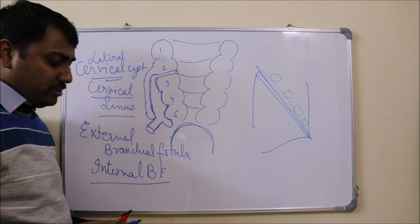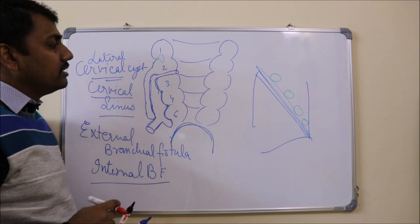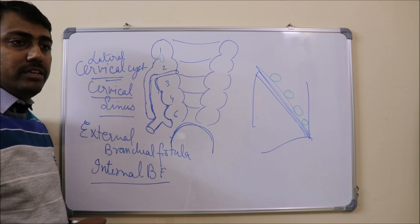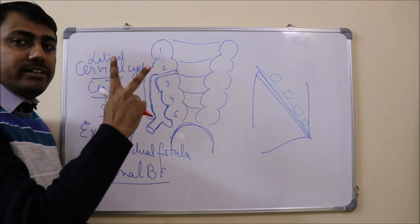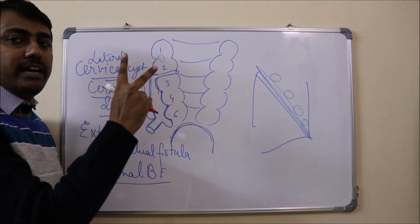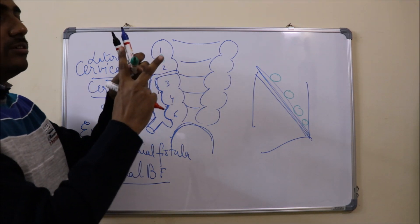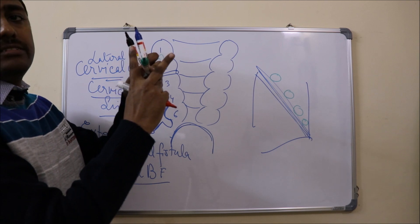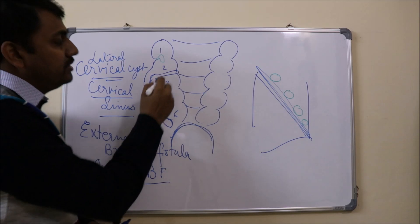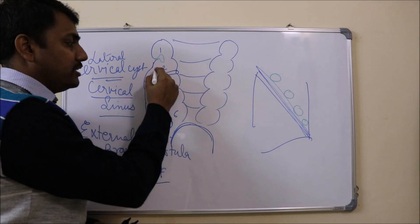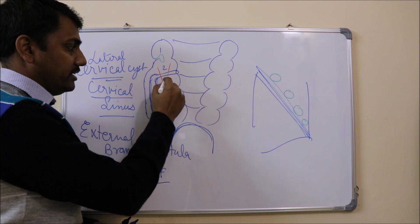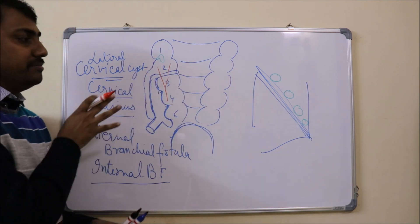One more important thing to remember: if this fistula is present, it passes through two important arteries — the internal carotid artery and the external carotid artery. So the fistula will pass between these two arteries. In this diagram, if this is the fistula, it will pass between the external carotid and the internal carotid artery.